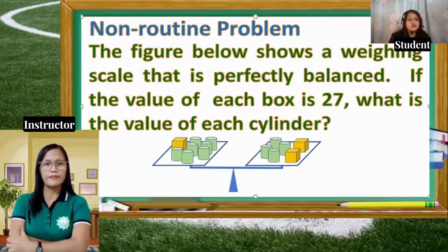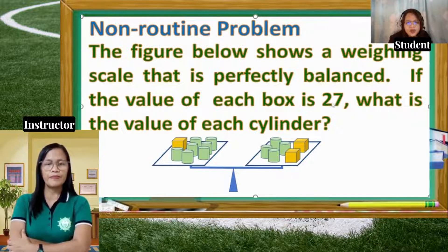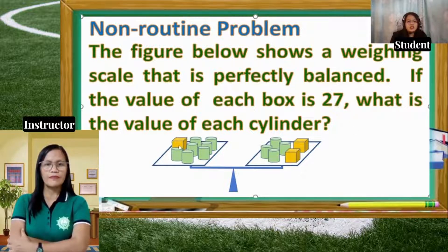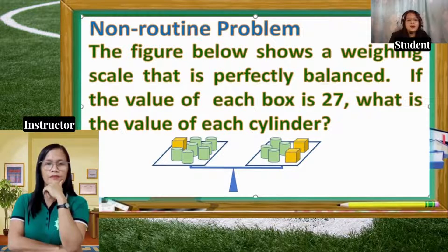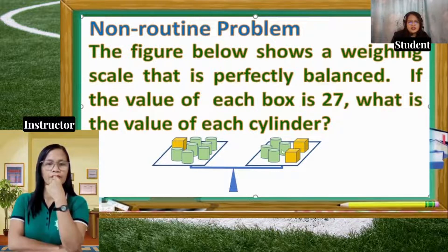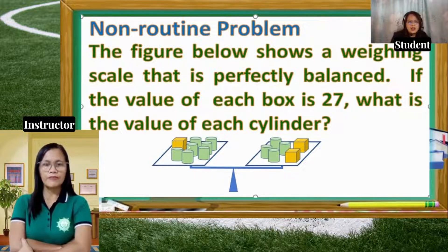For the non-routine problem example, the figure shows a weighing scale that is perfectly balanced. If the value of each box is 27, what is the value of each cylinder? We assume the cylinders have equal weights. The given is 27, which is the value of one box. One box on one side equals the weight of one box on the other side. This side has 4 cylinders, and the other side has 4 cylinders also, leaving 3 cylinders on one side.